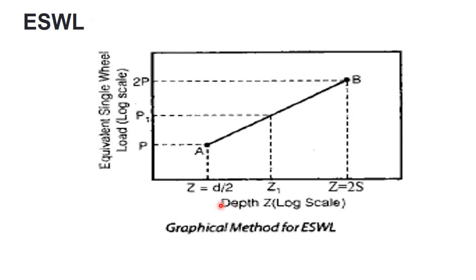In this figure, a graphical representation for finding the ESWL value is shown. Mainly we need to locate point A and point B in a log-log sheet. The x-axis is taken as depth Z in terms of mm or centimeters, and the y-axis is taken as single wheel load factor. First, we need to locate point A, which has the coordinates P and d/2. Using the values P and d/2 in a log-log graph, we need to locate point A.